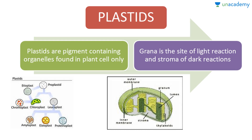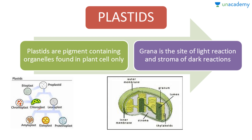Plastids are pigment-containing organelles found in plant cells only. The grana is the site of light reactions, which you can see here, and the stroma is the site of dark reactions. You can see the different types of plastids here. Chloroplasts are green-colored plastids seen in plants, and they contain chlorophyll.